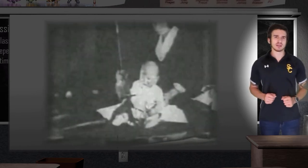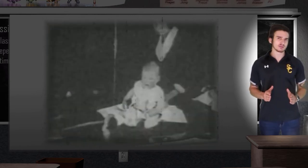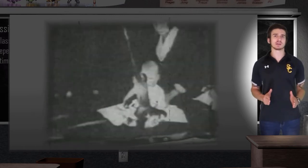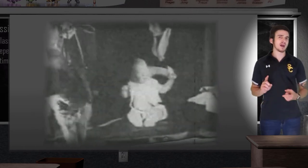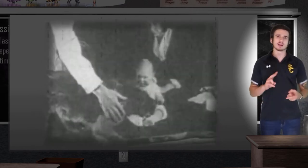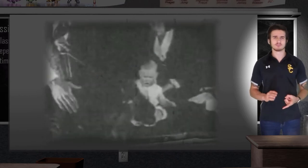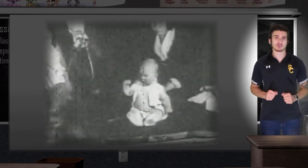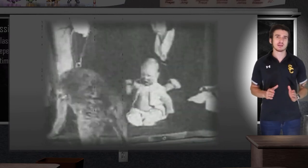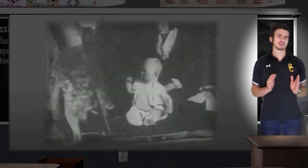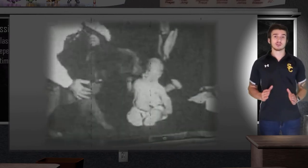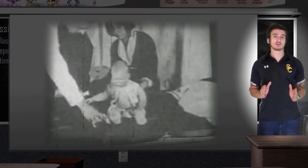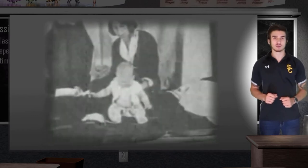Watson exposed a baby around the age of nine months, named Little Albert, to a series of various stimuli. Albert was shown rabbits, a monkey, different masks, even newspaper on fire. Watson observed Little Albert's reactions to each one of the stimuli, just to make sure he did not already exhibit a fear response. Little Albert was eventually shown a rat, which he took particular interest in. Watson decided that the rat would be the chosen stimulus for the experiment.